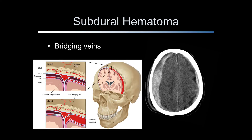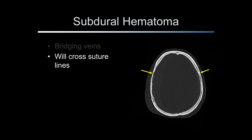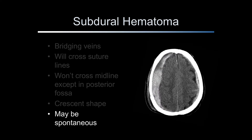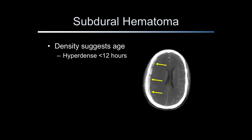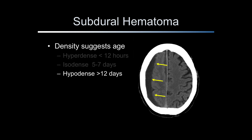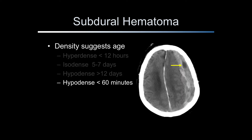Subdural hematomas are typically due to injury to the bridging veins. They will cross suture lines, unlike epidural hematomas, and they won't cross the midline except in the posterior fossa. When following the convexity of the skull, they are crescent-shaped and may occur spontaneously, especially in elderly patients or patients on warfarin or clopidogrel. Subdural hematomas can be acute, subacute, and chronic, and the CT density of the hematoma suggests the age of the bleed. An acute subdural hematoma is radiographically hyperdense or white. A subacute subdural hematoma is approximately 5 to 7 days in age and appears isodense to the brain. Chronic subdural hematomas are approximately 11 to 13 days old and appear hypodense or black. Hyperacute bleeding, also called active extravasation, appears hypodense because the blood is not yet clotted.